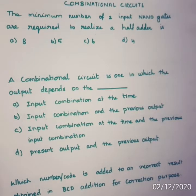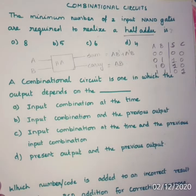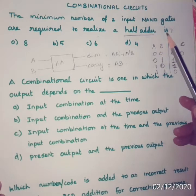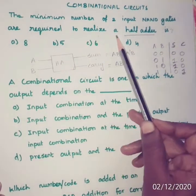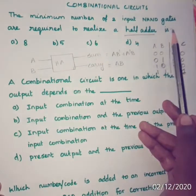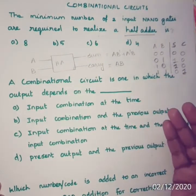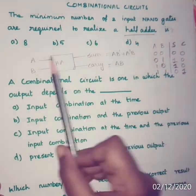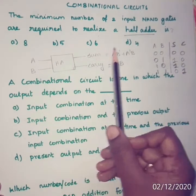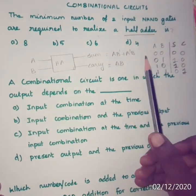In this video, we will see some objective type questions and answers in combinational circuits. First question: the minimum number of 2-input NAND gates required to realize a half adder — is it 8, 5, 6, or 4?